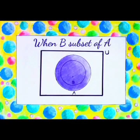When B is a subset of A, which means set A contains all the elements of set B, the Venn diagram is represented as shown.